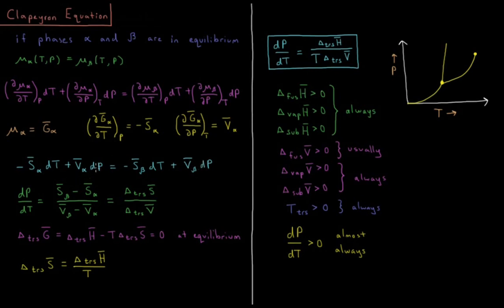Collecting the dP and dT terms to one side and dividing both sides by dT, we can rearrange this equation to: dP/dT equals (S̄_beta minus S̄_alpha) divided by (V̄_beta minus V̄_alpha) — the difference in molar entropies over the difference in molar volumes. This is equal to the entropy change of transition from alpha to beta divided by the molar volume change of transition between alpha and beta.